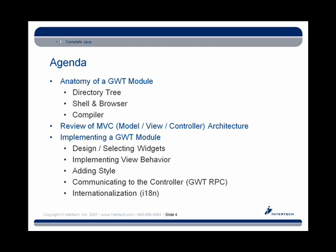A GWT module is a collection of widgets — a collection of things you can put into a web application. When we look at the module, we'll look at its anatomy: what's the directory tree that's created when you make a GWT module, and where do all the different components live. We'll look at the shell and browser provided by GWT, which are special applications that help you write and test your modules. Then we'll look at the compiler, which takes your Java code and turns it into JavaScript.